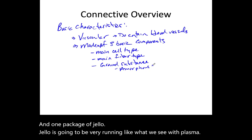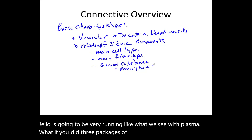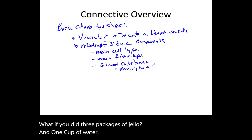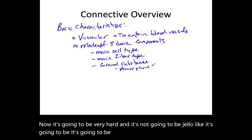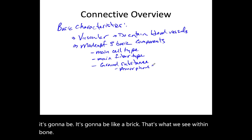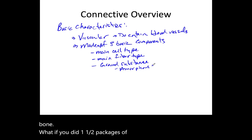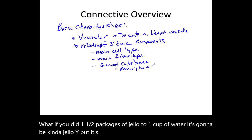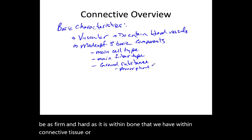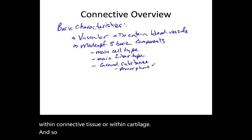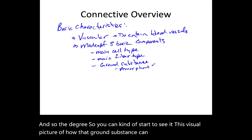If you did three packages of jello to one cup of water, it's going to be very hard — like a brick. That's what we see within bone. One and a half packages to one cup gives you something firm but not as hard as bone — that's cartilage. So you can see how the ground substance can vary from tissue to tissue, and the fiber type can vary as well.